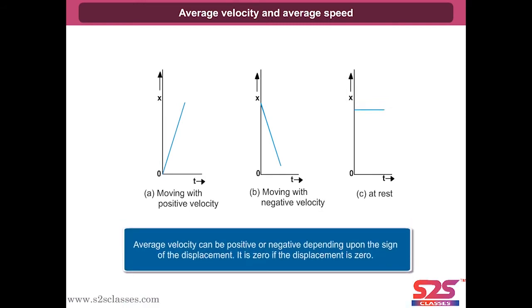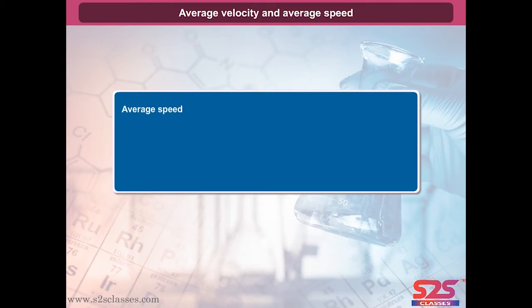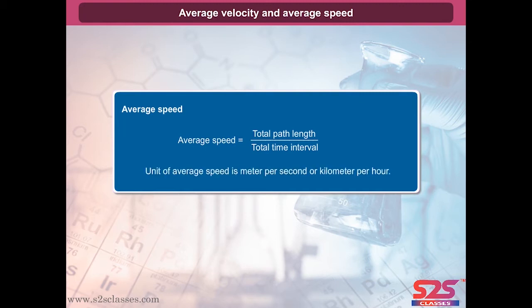Average velocity can be positive or negative depending upon the sign of the displacement, and is zero if the displacement is zero. Average speed is the total path length traveled divided by the time required to travel that distance. The unit of average speed is meter per second or kilometer per hour.